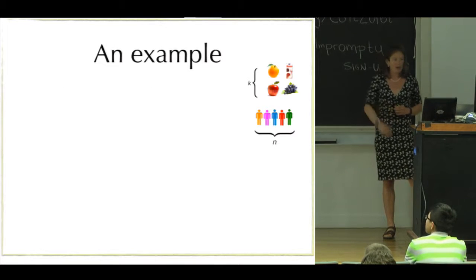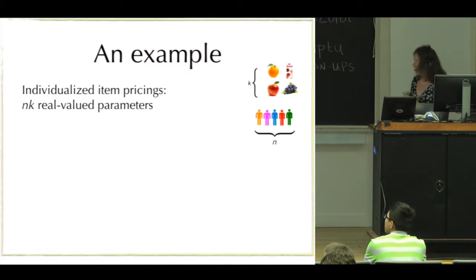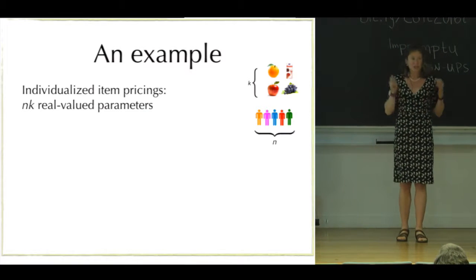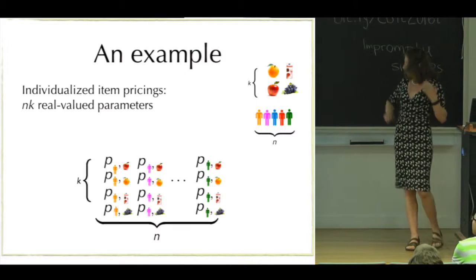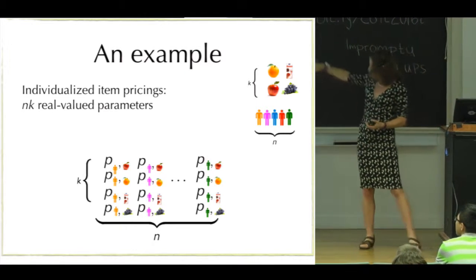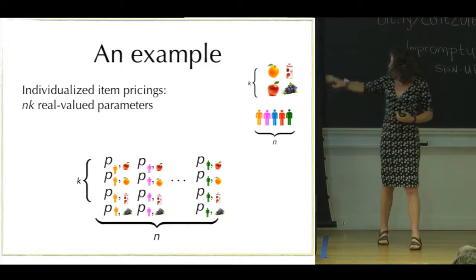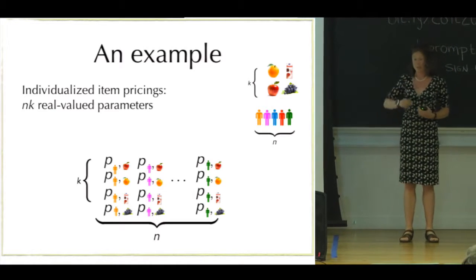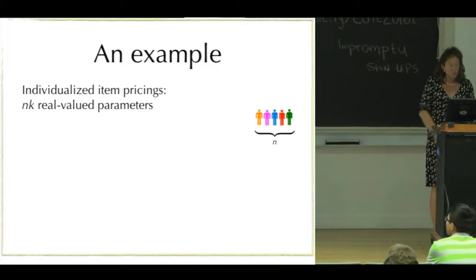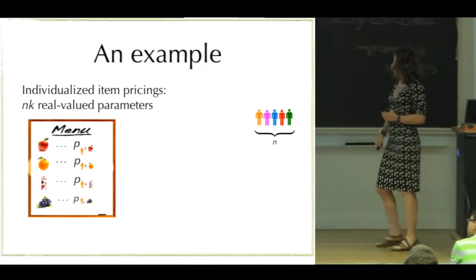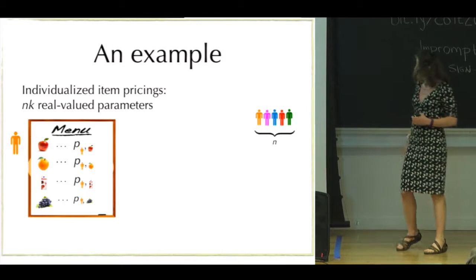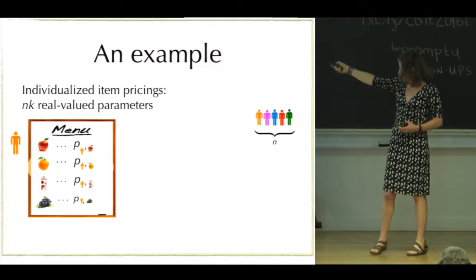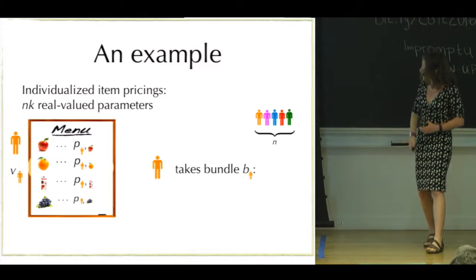I want to give one quick running example, which is individualized item pricing. I want you to think about this as just being parameterized by n times k real-valued numbers, and I've suggestively used the letter P to stand for price. Price sub colored little person comma item just refers to the price for that item for that person. For example, suppose the orange person is first. The orange person walks in, sees a menu, gets to choose any subset of items from that set of items that are available on the menu.